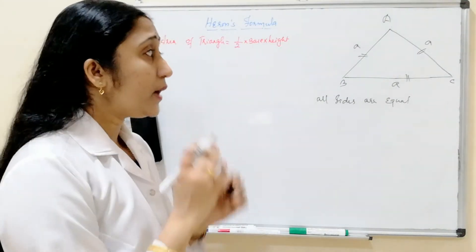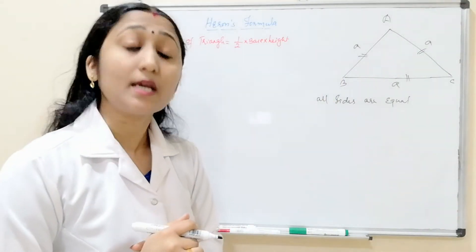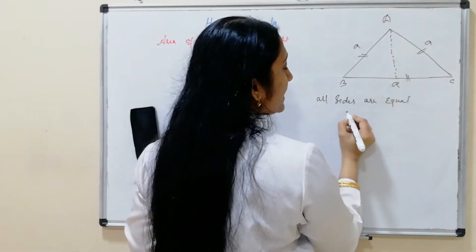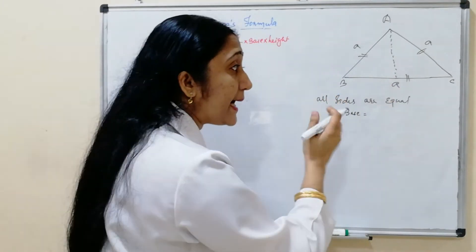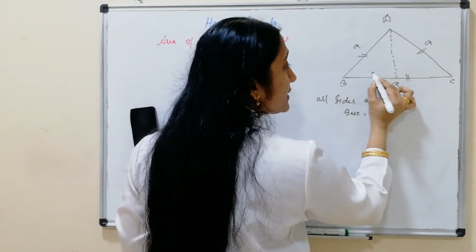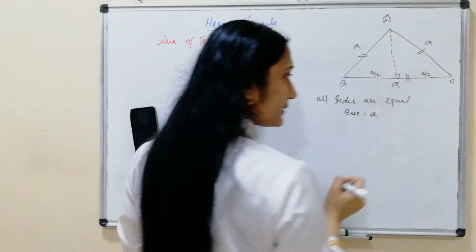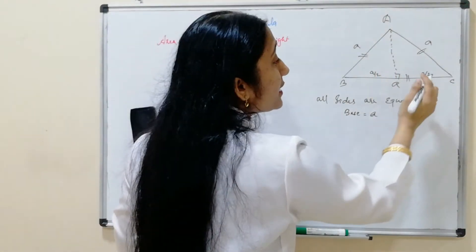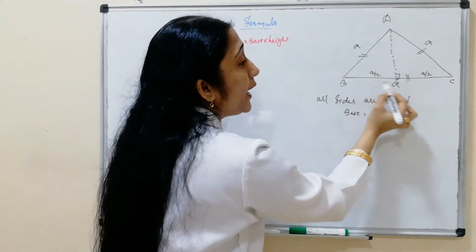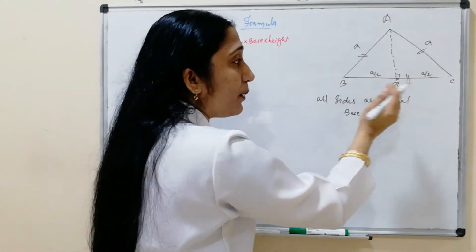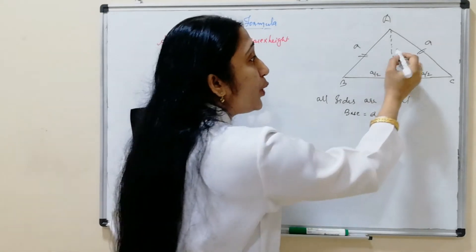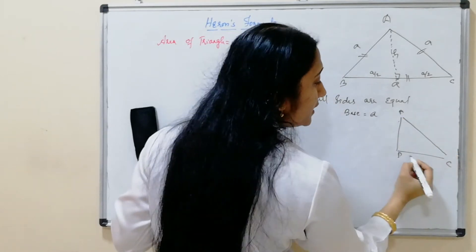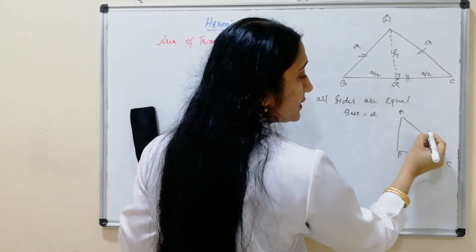To find the area of an equilateral triangle, you draw a perpendicular from A to the base. The base is equal to A. This perpendicular divides the base into two equal parts: A by 2 and A by 2, with a right angle at point P. From here, using the triangle APC, we need to find the height AP. Using the Pythagoras theorem, AC squared equals PC squared plus AP squared, so AP squared equals AC squared minus PC squared.